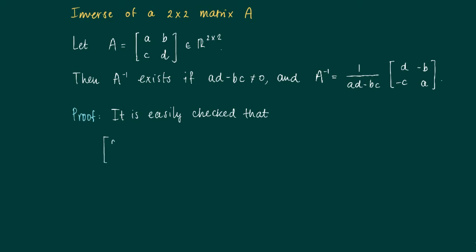We get the matrix a, b, c, d which is A times 1 over ad minus bc times the matrix d, minus b, minus c, a.